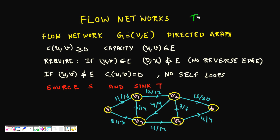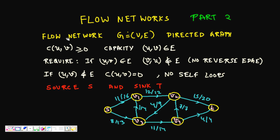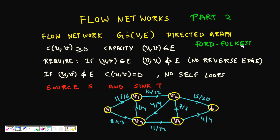This is Part 2 of flow networks. In the first lecture we saw how to find the max flow for a network from a given source to destination. We saw that by choosing paths randomly it did not always work, so here we will discuss an algorithm known as Ford-Fulkerson. We will introduce new concepts like augmenting path, residual network, and properties of flow networks necessary to understand this algorithm.